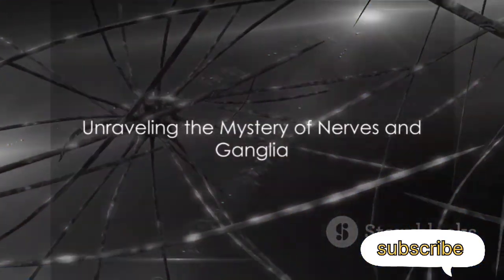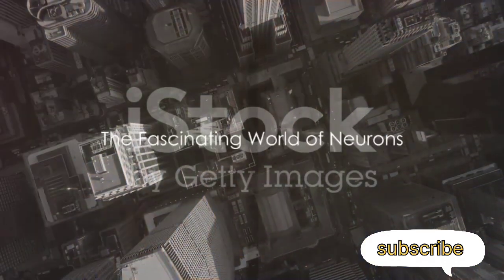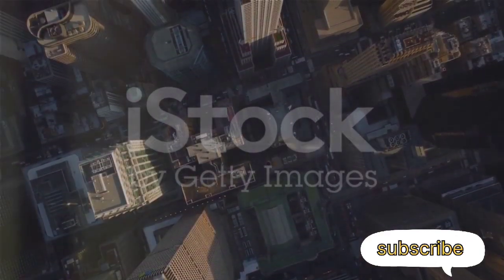So, nerves and ganglia are the communication lines that keep the city running smoothly. The world of neurons is complex and fascinating, just like a bustling city.